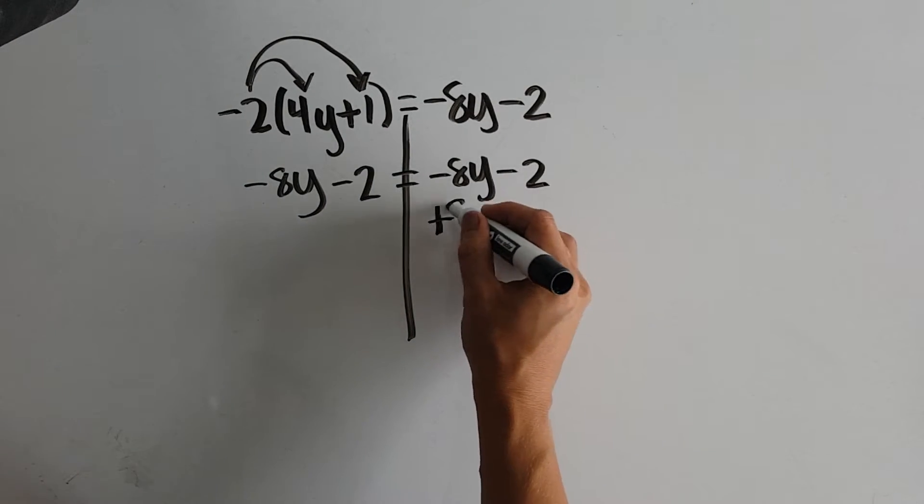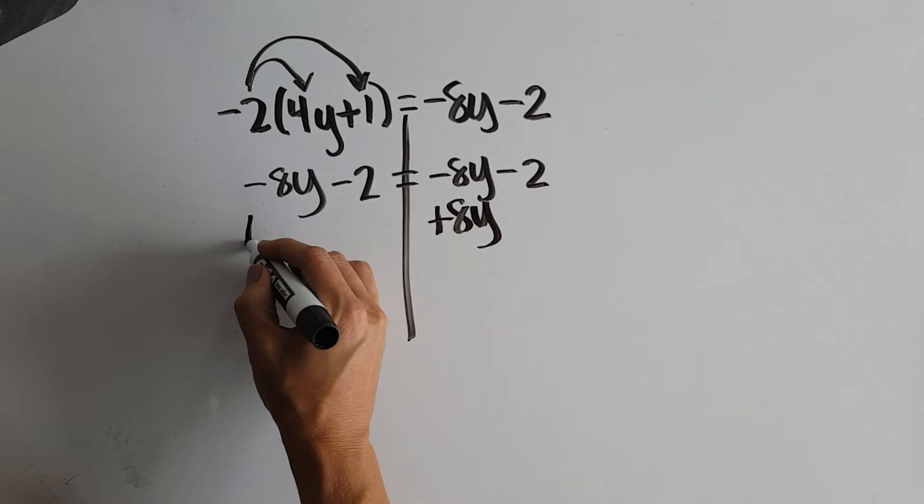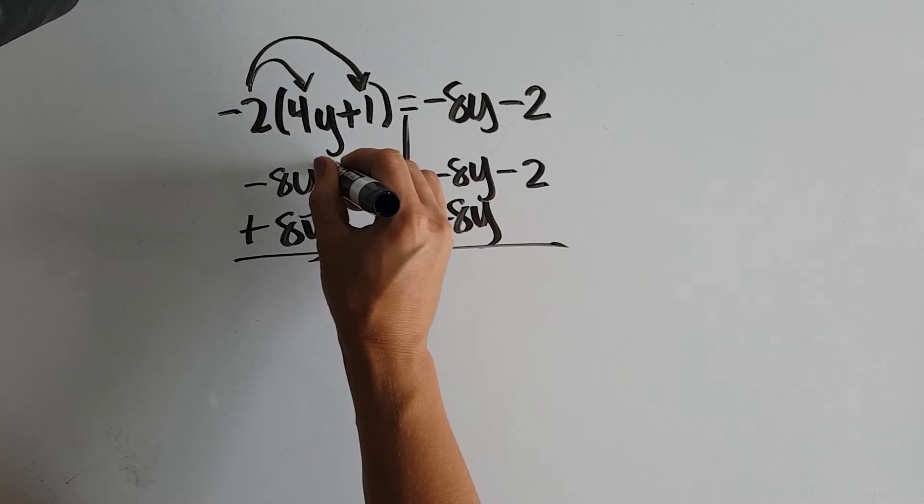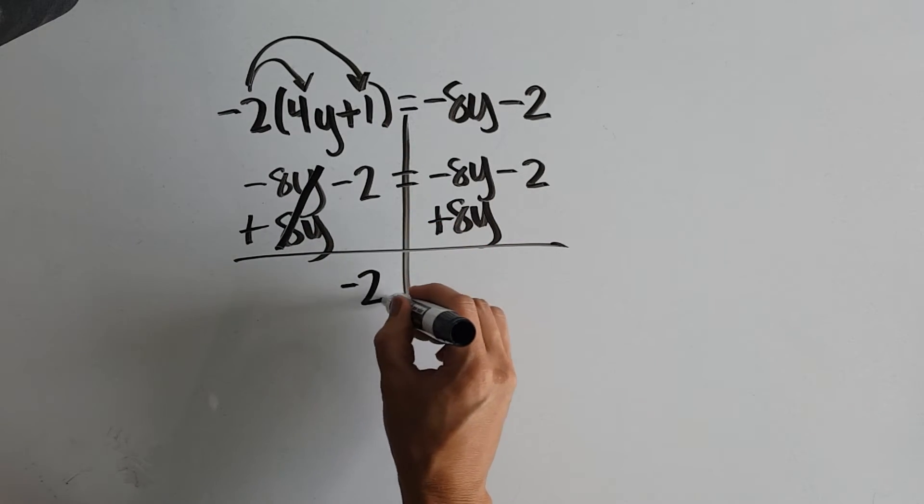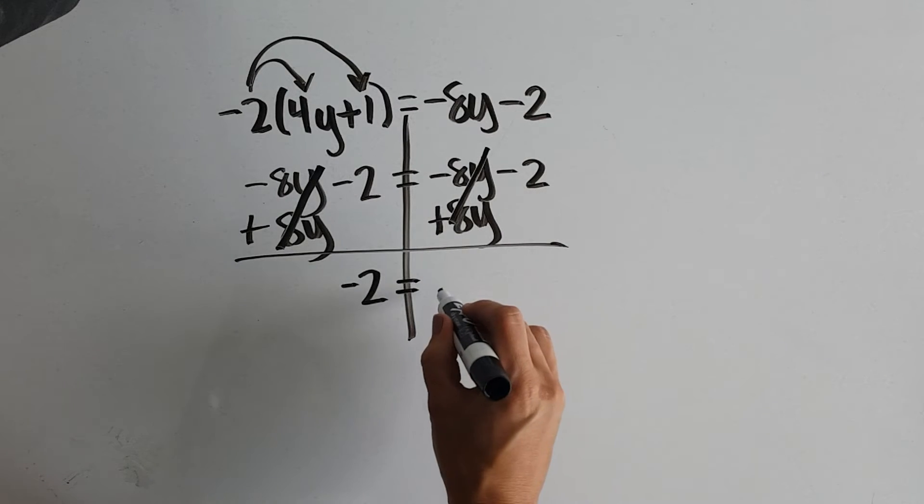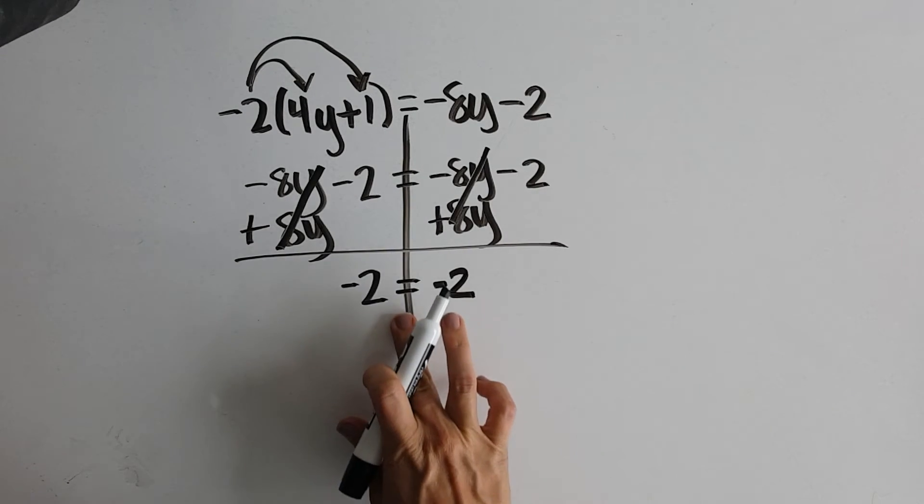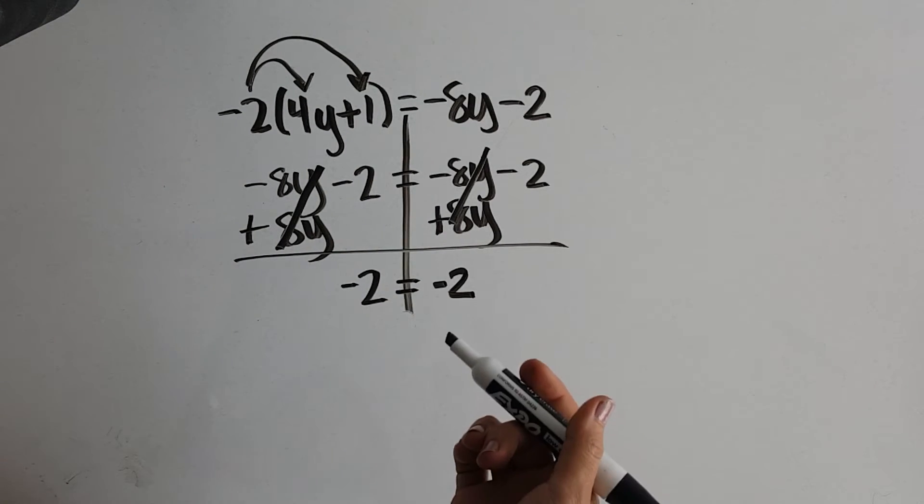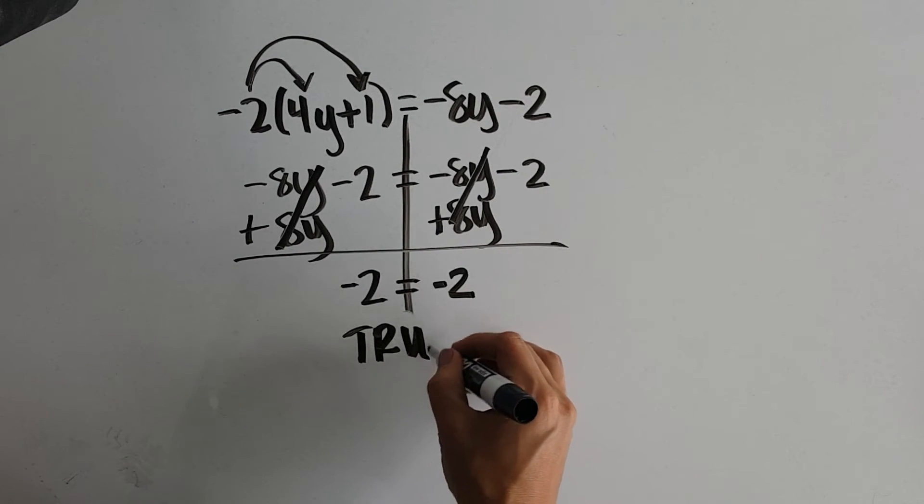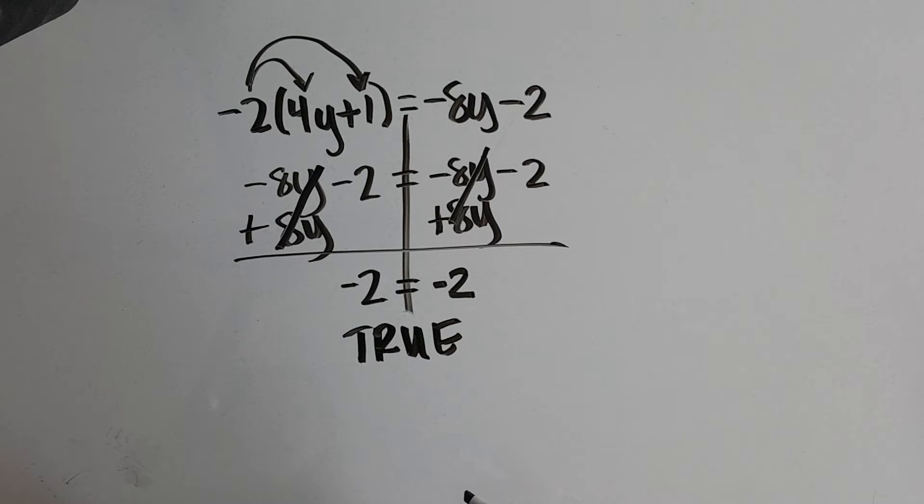So if I collect all my variable terms, add 8y to both sides. Negative 8y plus 8y is 0. Minus 2 is negative 2. Negative 8y plus 8y is 0. Minus 2 is negative 2. Well again, all of our variables canceled out. But we were left with a statement that this time is true. Negative 2 is in fact equal to negative 2. When you end up with something like this, you have infinitely many solutions.